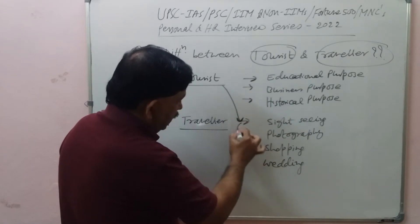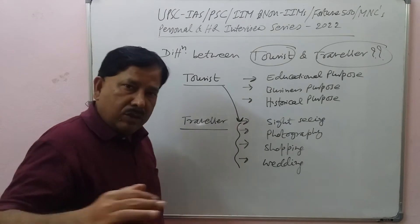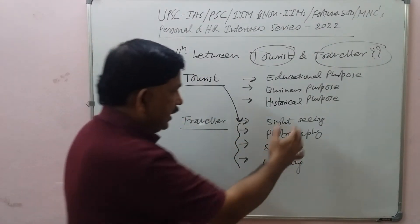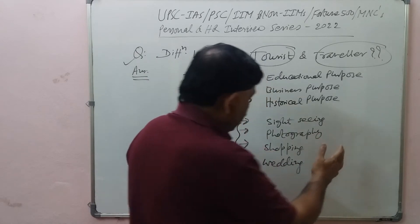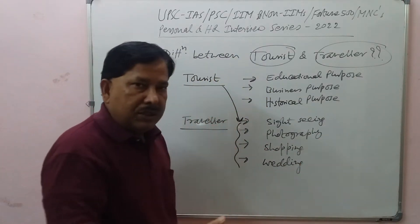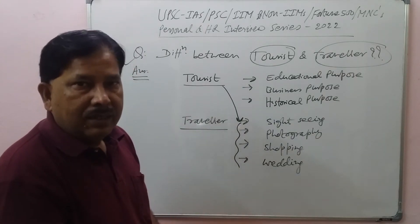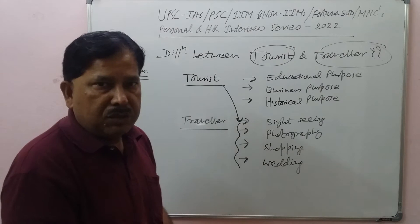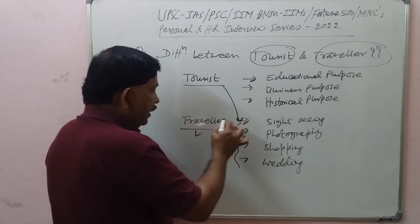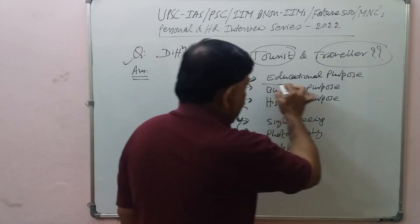Tourists are those who are visiting, traveling, going from one place to another all over the world for sightseeing, photography, shopping, or weddings — they are called tourists. That is why you get a tourist visa for three months, maximum I think six months, but not more than that.